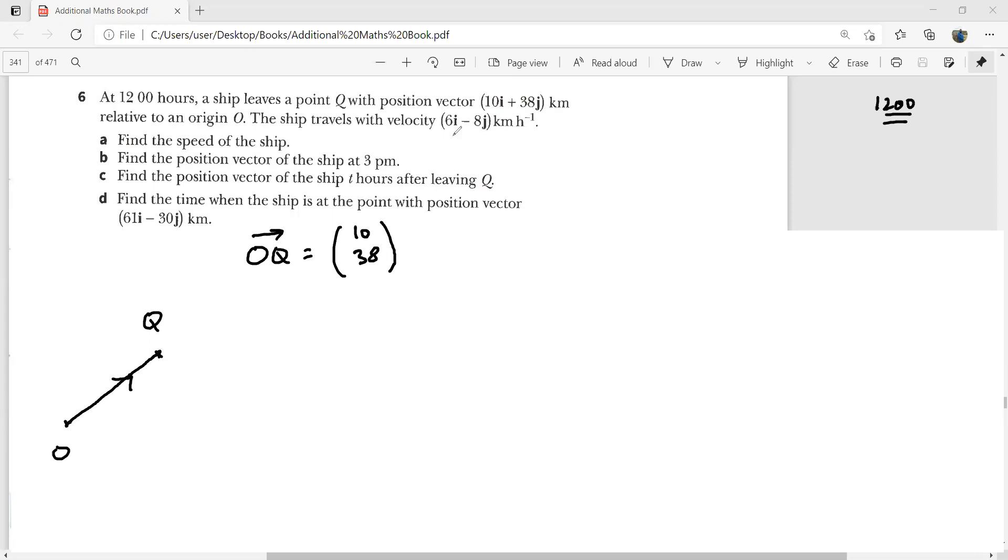Now it says relative to an origin, the ship travels with velocity 6i minus 8j. So this is in kilometers. Now 6i minus 8j, if I show you through the diagram, this is a grid with coordinates. So every hour, the ship moves this much. This is like translation. So in one hour time, the ship would be here.